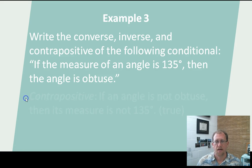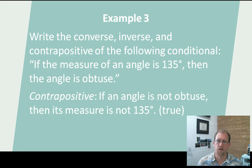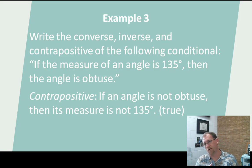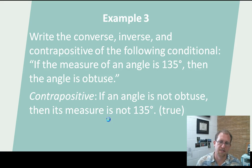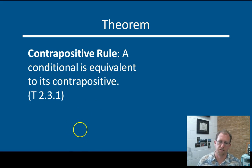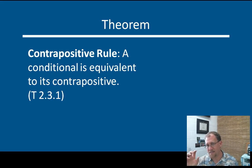And then a contrapositive — we negate and reverse the order. If an angle is not obtuse, then its measure is not 135 degrees. That actually is true because if it's not obtuse, then it's definitely not 135 degrees — if it's not obtuse, it's a straight angle or less than 90, and none of those could be 135. Contrapositives usually have the same truth value as the original statement. The contrapositive rule: a conditional is equivalent to its contrapositive. So however the true and falses work for a conditional statement, the same values will work for the contrapositive.